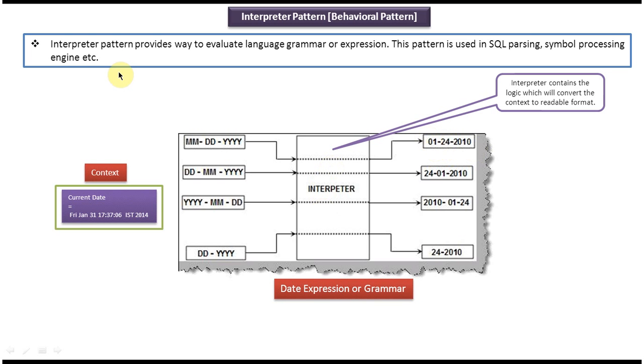So now if you read this explanation, you will understand very clearly. Interpreter pattern provides a way to evaluate language grammar or expression. In this case, the language grammar or expression is mmddyy or ddmmyy like that. So based on the expression, it interprets the context date value and provides the output.